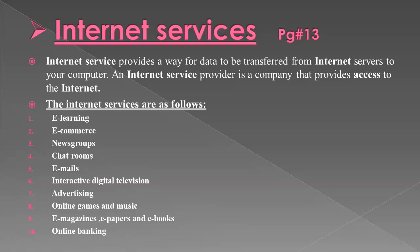Next is online games and music. You can play various games over the internet and listen to songs and more. Next are electronic magazines, electronic newspapers, and electronic books. You can read newspapers, magazines, and books online without having to buy them in paper format. Finally, there is online banking. You can use an ATM card for withdrawing cash from your account and also transfer money online from one bank to another bank.